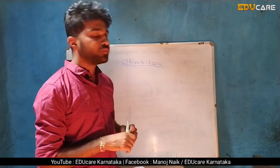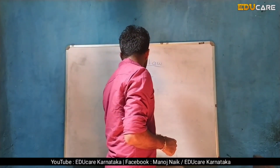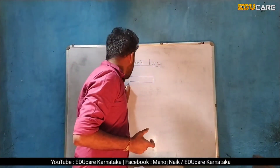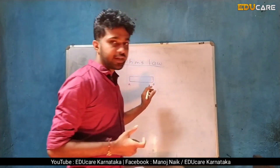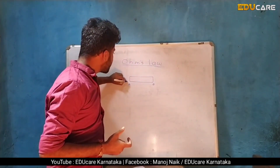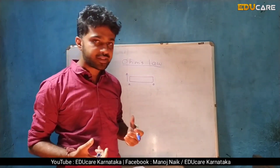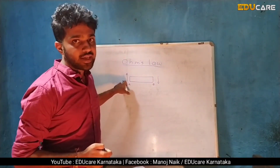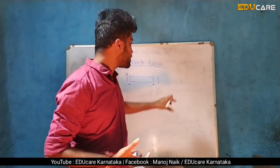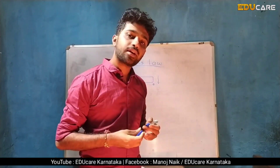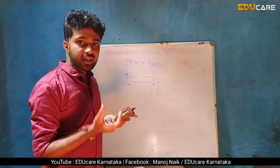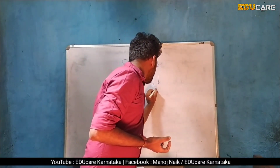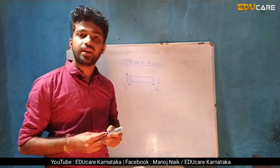Let us consider a diagram. Let us consider a conductor with two ends, which we can label A and B. We consider the charges and other factors on either side. V1 and V2 represent the potentials at these points.